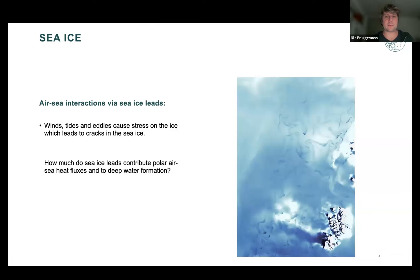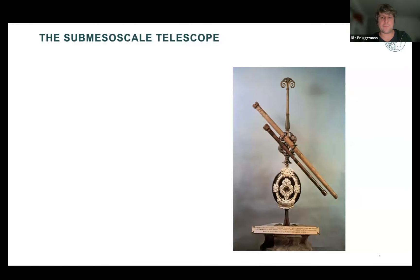Another interesting aspect is sea ice. As Daniel mentioned, we have sea ice coupled to our ocean model, and once you approach kilometer-scale resolution you see completely new structures — leads and cracks in the ice which you couldn't see in coarser simulations. These cracks and leads are created by winds, tides, and eddies, and they feature strong heat loss from the ocean. The question is how important this is for Arctic and Antarctic heat budgets and for deep water formation. However, 1.25 km was not enough for all our purposes, so let me introduce a second type of simulation.